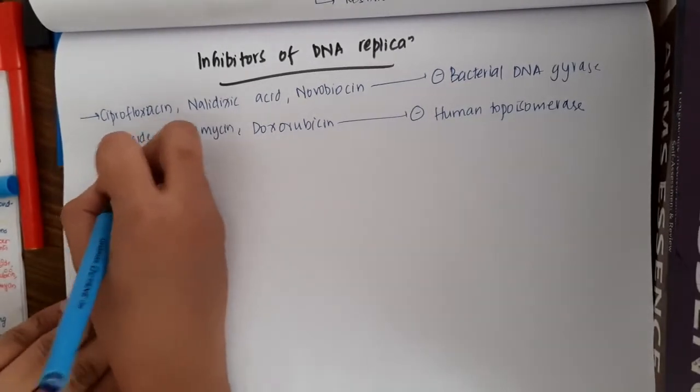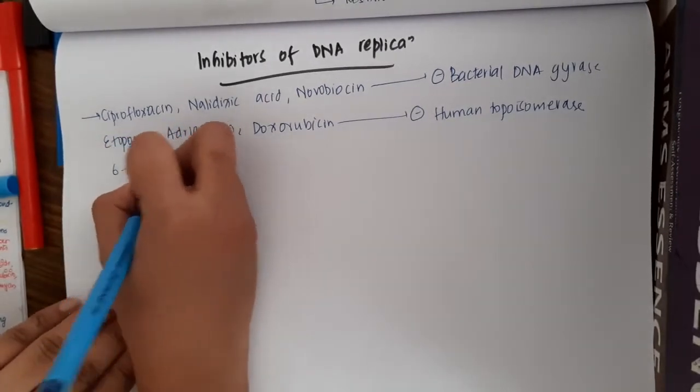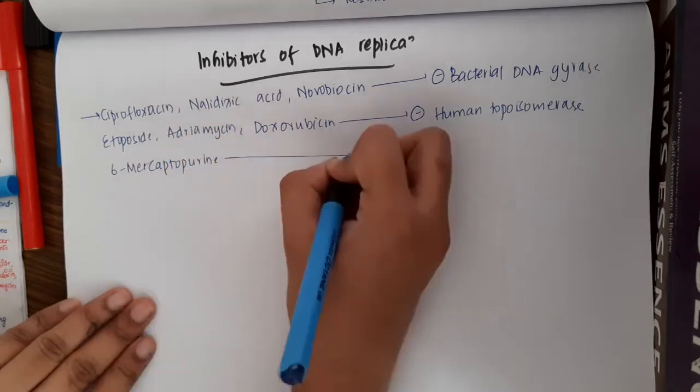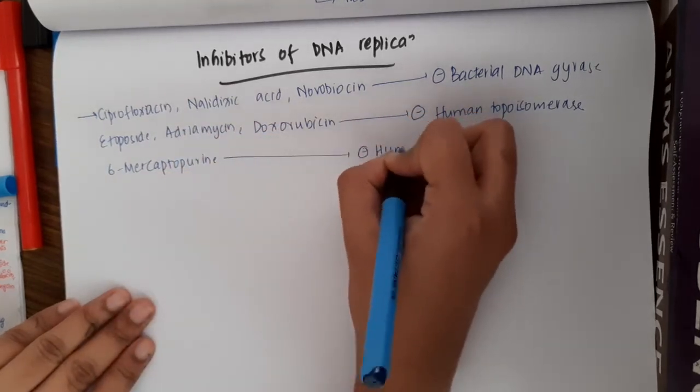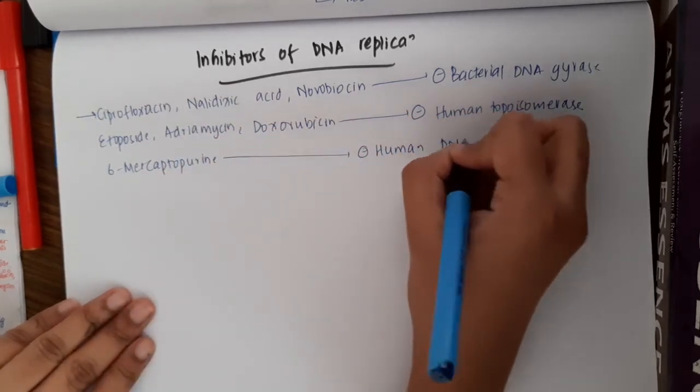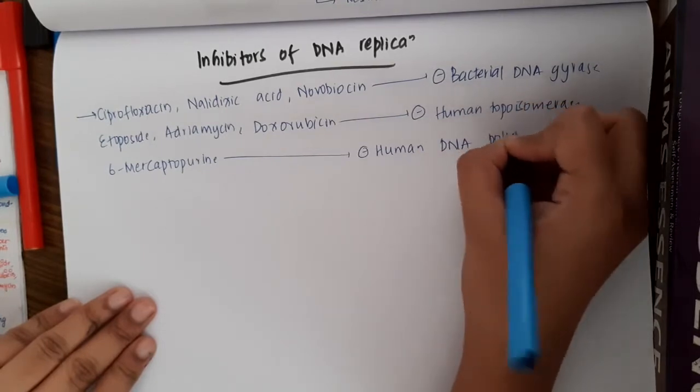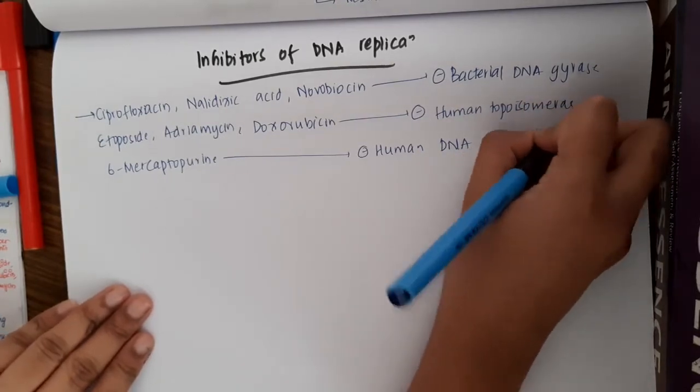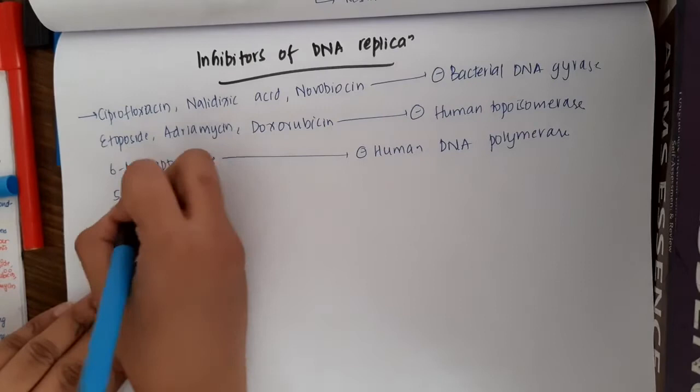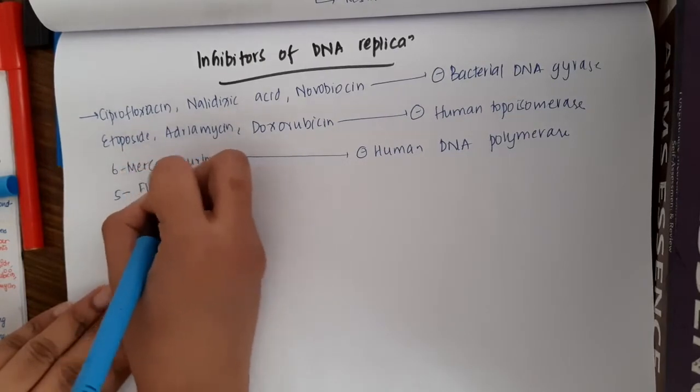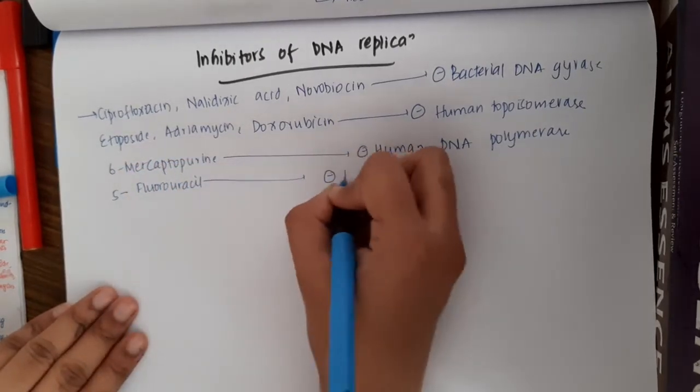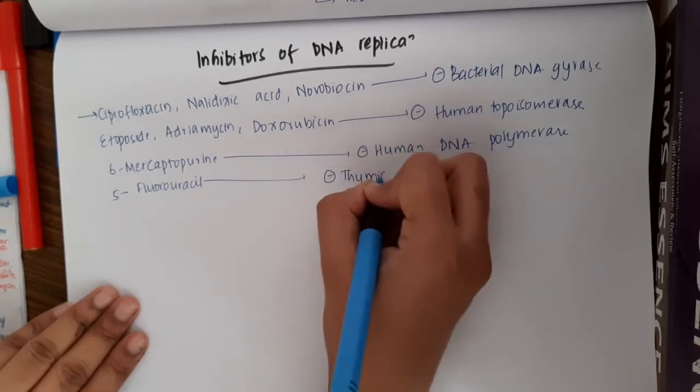Then 6-mercaptopurine will inhibit human DNA polymerase. The anti-cancer drug 5-fluorouracil will inhibit thymidylate synthase.